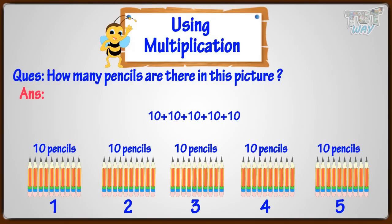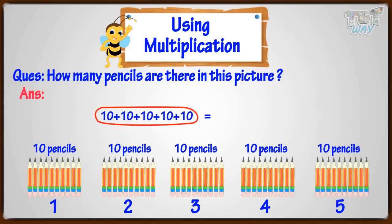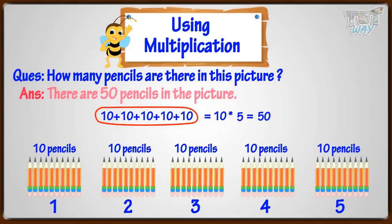Remember, we use multiplication for repeated addition problems. So, instead of adding ten five times, we can multiply ten with five. So, there are fifty pencils in the picture.